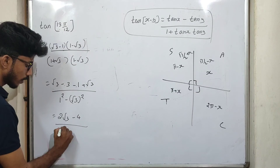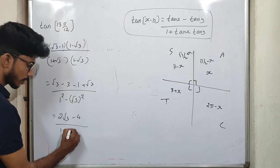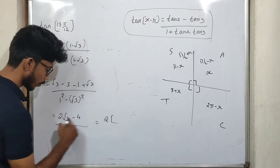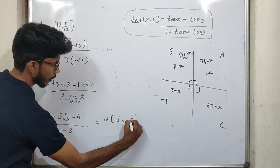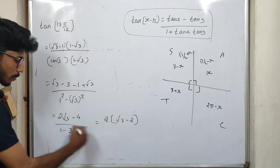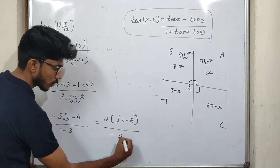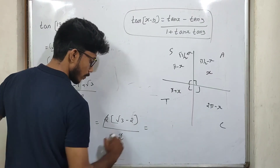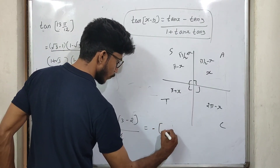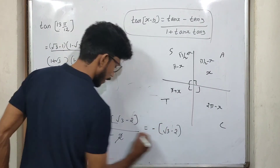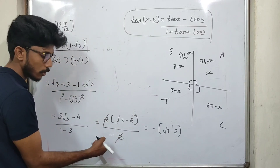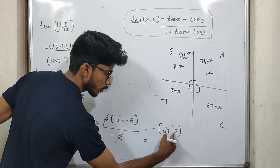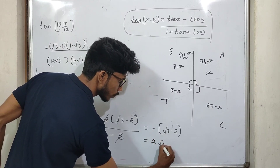So we have 2 root 3 minus 4 divided by 1 minus 3, which is minus 2. Taking 2 as a common factor: 2(root 3 minus 2) divided by minus 2. The 2s cancel. There is a minus sign, so minus of (root 3 minus 2) gives minus root 3 plus 2, which equals 2 minus root 3. That's the answer.